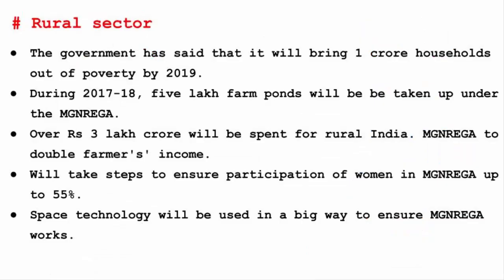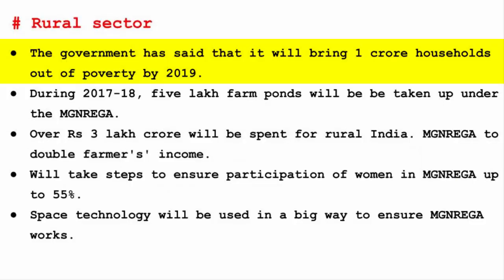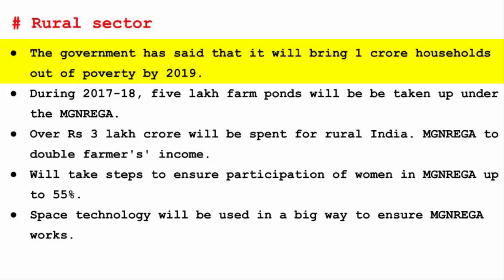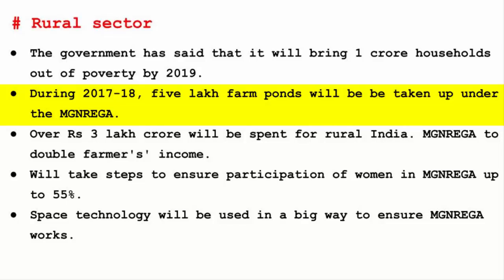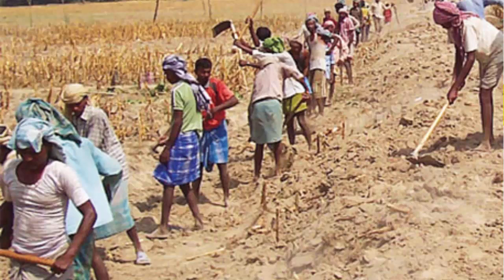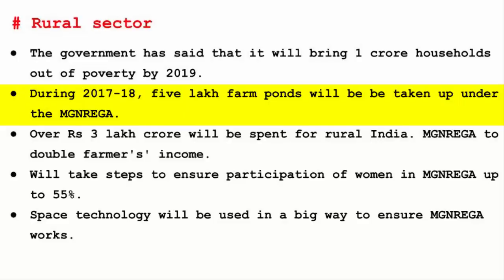Now we will see what the budget has for the rural sector. The government has said it will bring 1 crore households out of poverty by 2019, under the existing social scheme called Antyodaya. 2019 will also mark the 150th birth anniversary of Mahatma Gandhi, making it a special year for such a target. During 2017-18, 5 lakh farm ponds will be taken up under MGNREGA — the Mahatma Gandhi National Rural Employment Guarantee Act — giving employment to people by making them clean ponds and irrigation facilities, which helps farmers during summer months. It's a win-win situation for both sides.